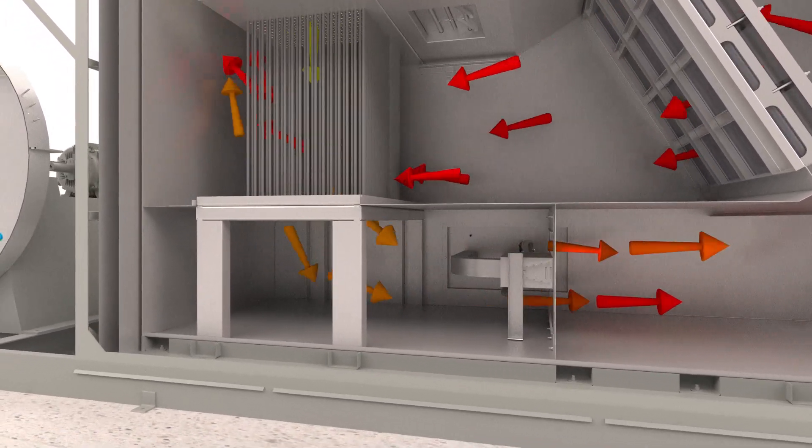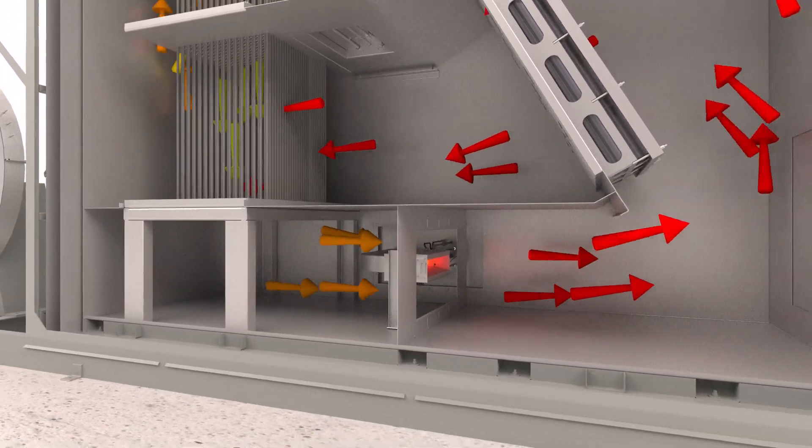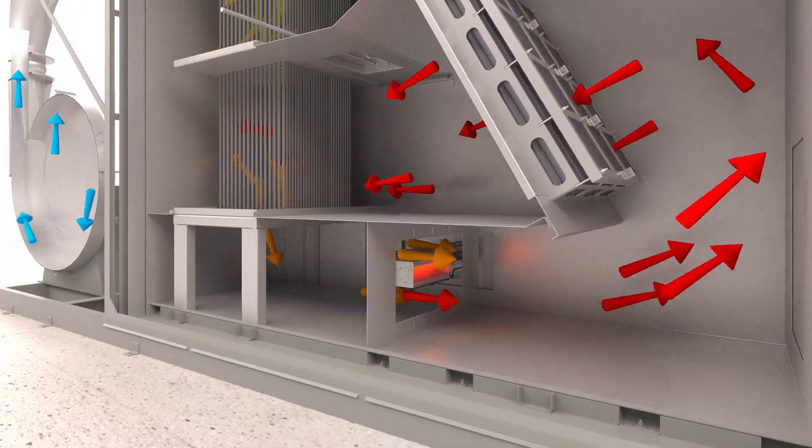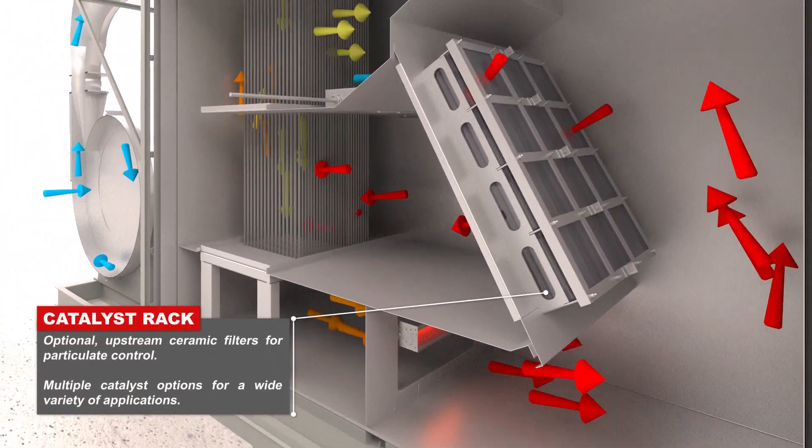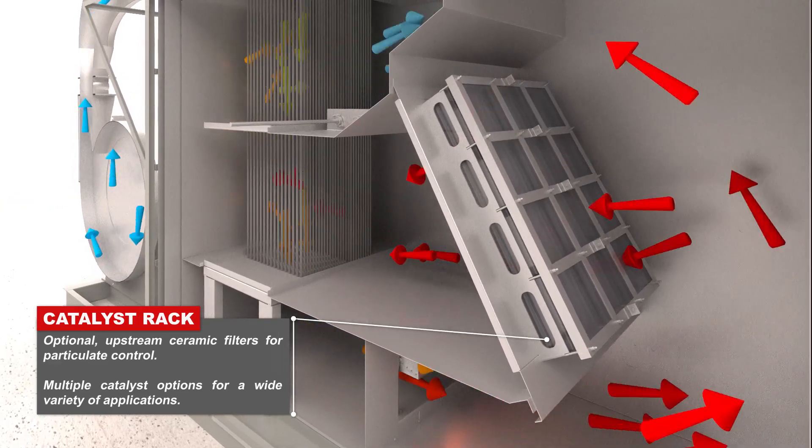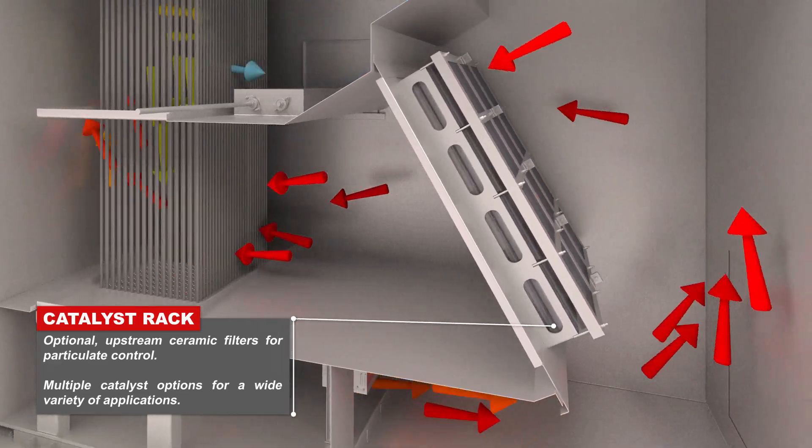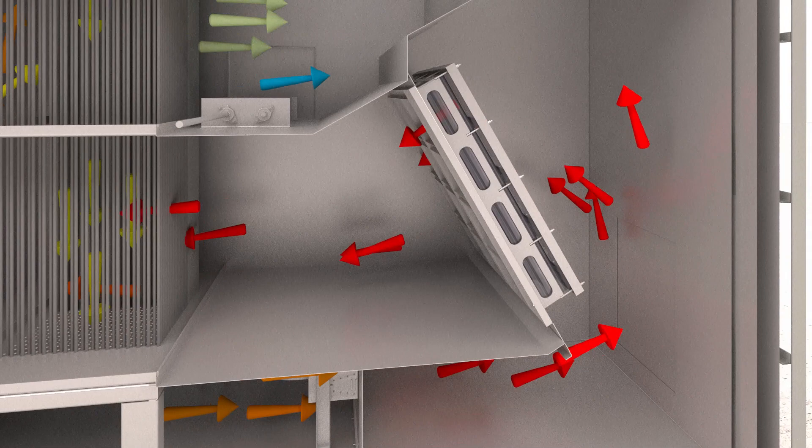At the burner, processed gas is raised to the catalyst operating temperature. As the heated gas passes through the catalyst, an exothermic heat-releasing reaction takes place as the pollutants are converted to heat, water vapor, and minimal carbon dioxide.